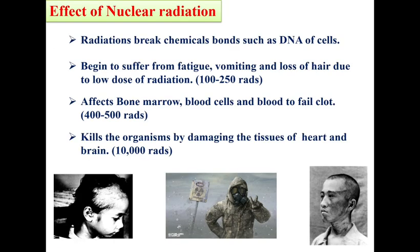Next, the effects of nuclear radiation. We experience a huge number of effects because of this radiation. First, radioactive emissions break the chemical bonds present in the DNA of human cells. The effect may be instantaneous or delayed, and may even be carried to future generations — what we call genetic mutations. Second, if subjected to a low dose of radiation, around 100 to 250 rem, we may suffer from fatigue, vomiting, or hair loss. If subjected to high radiation, around 400 to 500 rem, it will affect the blood cells and blood clotting capacity.